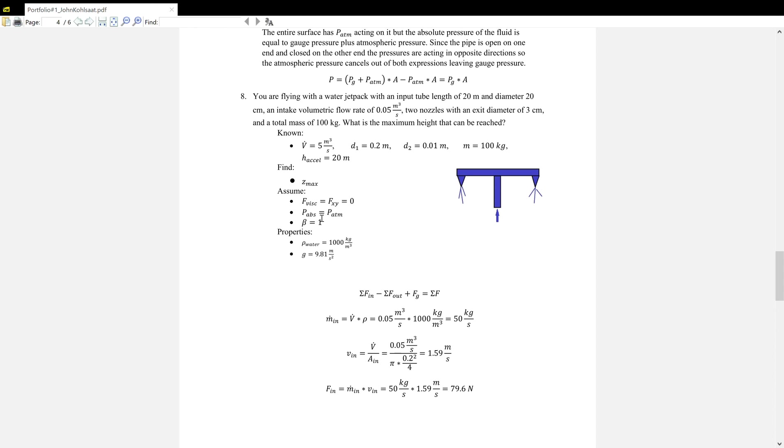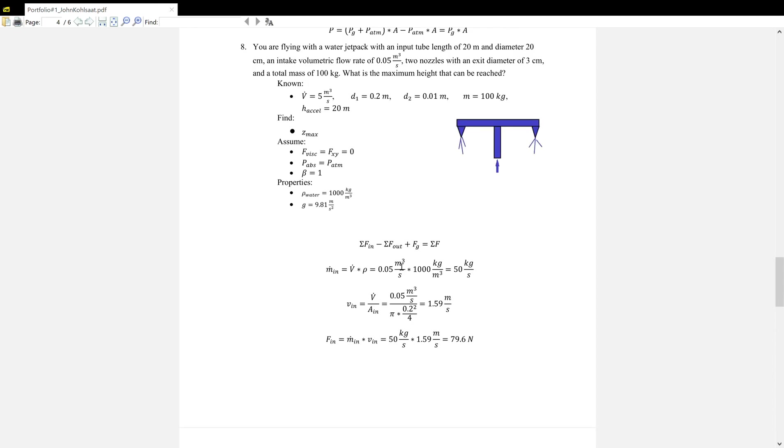We're told to find the maximum height, and we can assume force viscous and force xy equals zero, whereas we're going to be finding a force in the z direction. Pressure absolute equals P_ATM, and beta equals one. For our properties, we have density of water and g as usual. Now, we can start with a basic force balance, where force in minus force out plus force of gravity equals the sum of the forces.